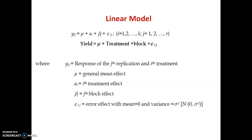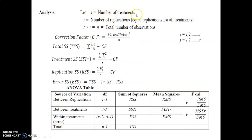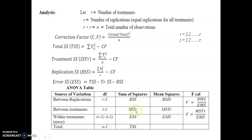We will see the mathematical analysis. Here t is the number of treatments, r is the number of replications (equal replication for all treatments), and t times r equals n, the total number of observations. When solving RBD manually, we have to calculate the correction factor, total sum of squares, treatment sum of squares, replication sum of squares, and error sum of squares. This leads to our final ANOVA table. We are interested in the F calculated value for between replications and between treatments versus error. This is the ANOVA table we will also attain using software.